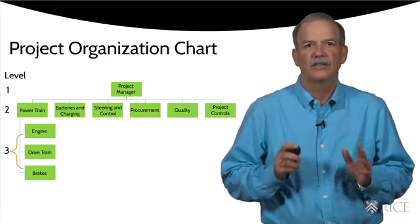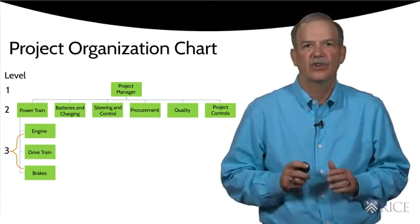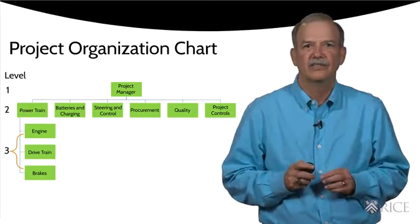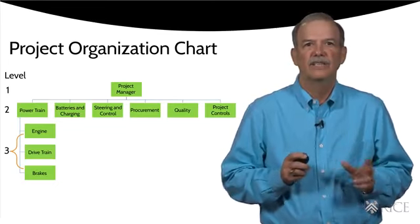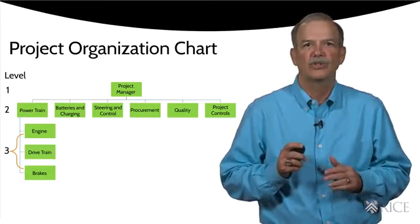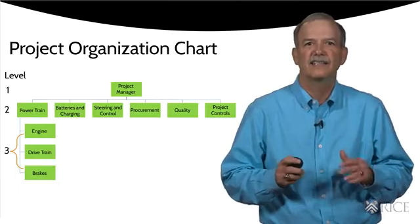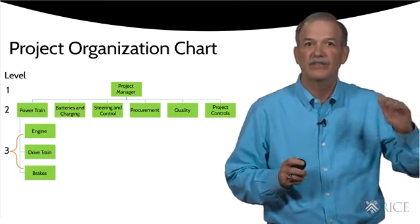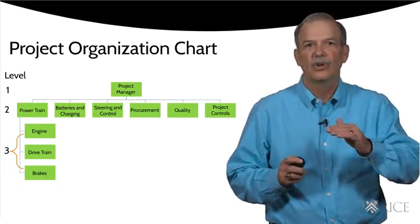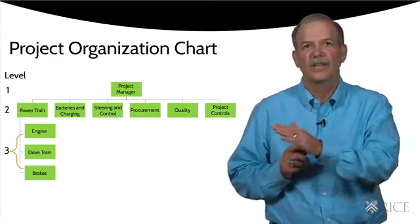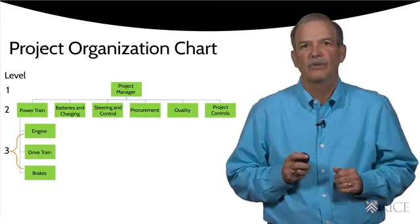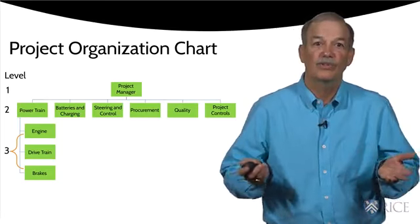One thing I'd like to note on this organization chart is the level designations. For ease of reference, most organization charts use a level reference. In this case, level one is the project manager, level two are his or her direct reports, and level three are the direct reports to the direct reports, and so forth.